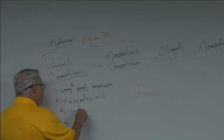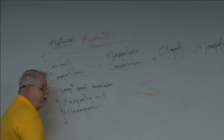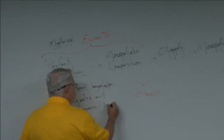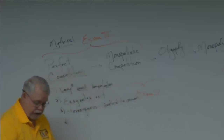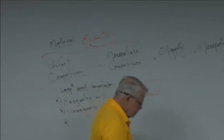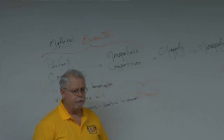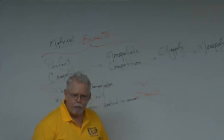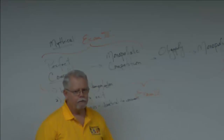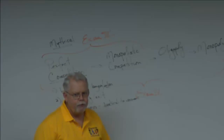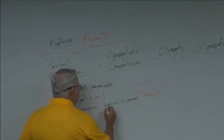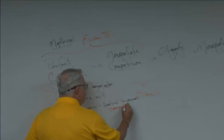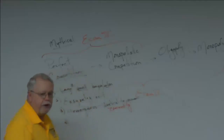Third assumption: homogeneous products. Homogeneous in this sense means identical in the eyes of the consumer. Take two percent milk — I don't care where you buy it, I don't care what brand name is on it; to me it's all the same. When they're all the same, we sometimes use the word 'commodity' — every unit is the same as every other unit; something has been commoditized.